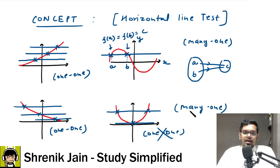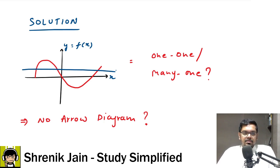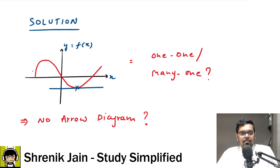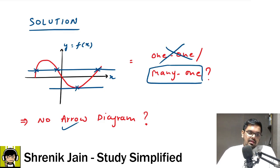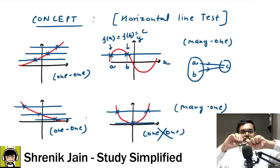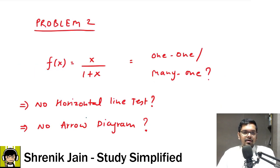Another example: a graph on x-axis and y-axis. A student might draw one horizontal line and say it cuts only once — one-one function. But you have to draw multiple horizontal lines. If I draw another horizontal line, it cuts the graph one, two, three times — more than once. So the answer is many-one function. When there's no arrow diagram, use the horizontal line test: one time only means one-one, more than once means many-one.